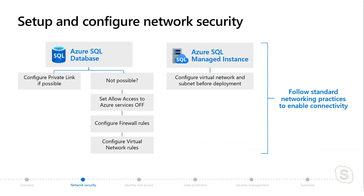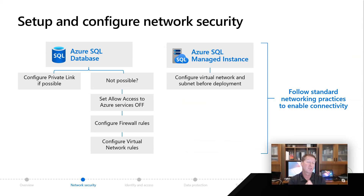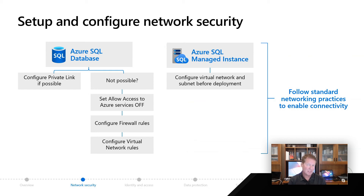As you've seen the architecture and how networking connects for Azure SQL Database and Managed Instance, here are some steps for making your choices on how to configure network security. For Azure SQL Database, private link is your most secure option and should be your first choice. There could be reasons why that's not possible, but allowing access to Azure services, while easy, is the least secure way — so we recommend turning that off. Then configure a specific set of firewall rules and/or virtual network rules to allow your different resources, whether inside Azure or on-premises, to connect to your Azure Database.